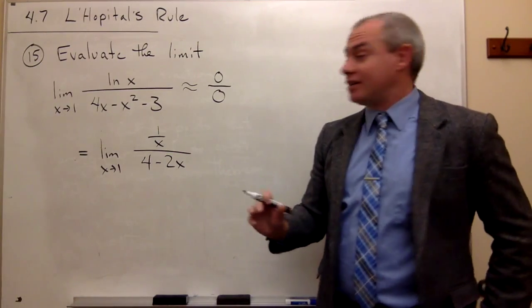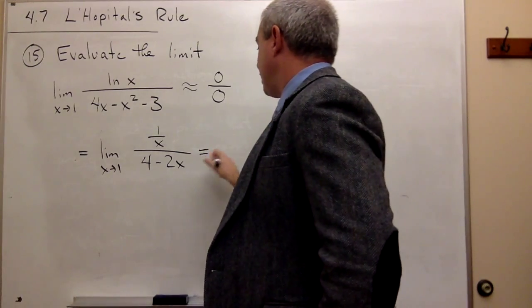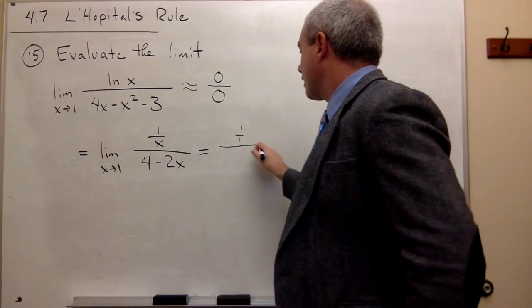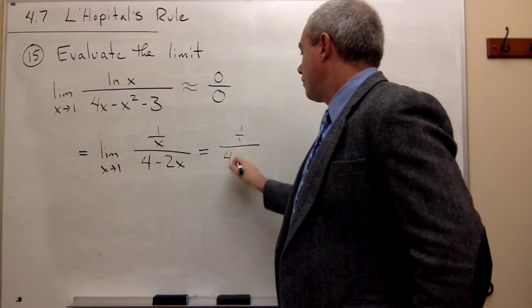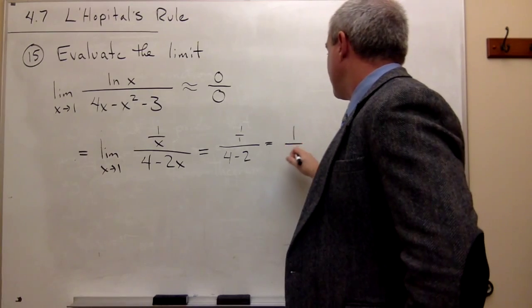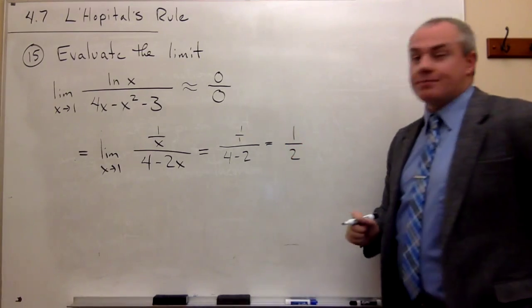So I can go ahead and take a limit. I can use an equal sign here. Everything's fine. And I get 1 over 1 divided by 4 minus 2 times 1, or 2. So I just get 1 over 2. And that is my limit.